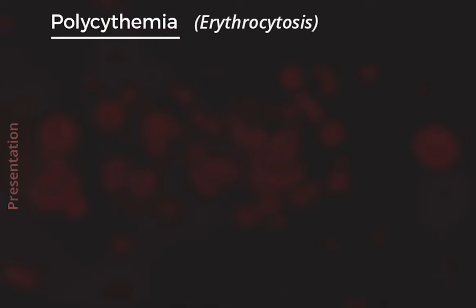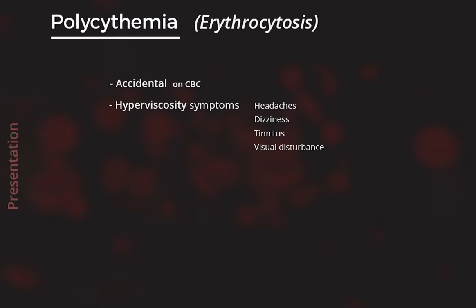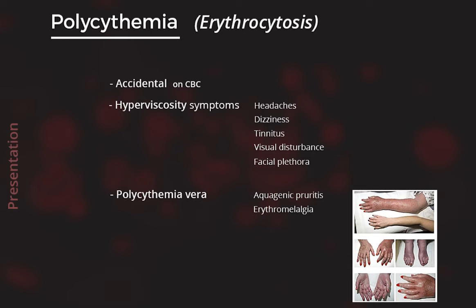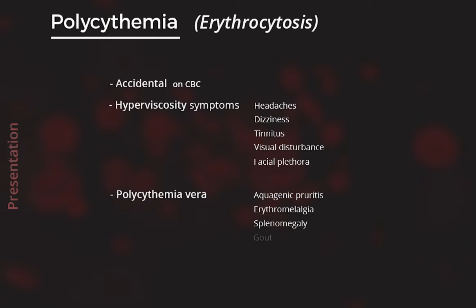How can polycythemia present clinically? Most commonly, polycythemia may be asymptomatic and is accidentally detected on complete blood counts. It may also present with vague symptoms due to hyperviscosity, such as headaches, dizziness, tinnitus, and visual disturbance. Facial plethora may be obvious. Patients with polycythemia rubra vera can have characteristic features like aquagenic pruritus, which is itching after exposure to water, and erythromelalgia, which is a burning sensation in fingers and toes. There is splenomegaly in up to 60%, and gout due to high red cell turnover. Due to hyperviscosity and stasis, they have an increased risk of arterial thromboses, particularly stroke and venous thromboembolism.